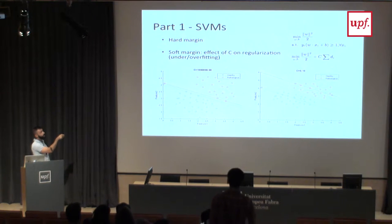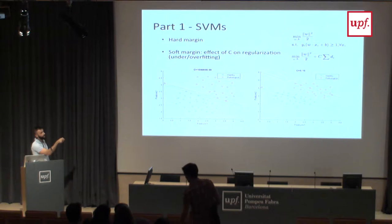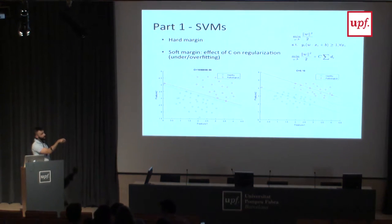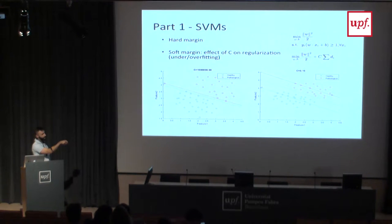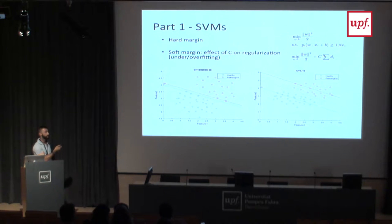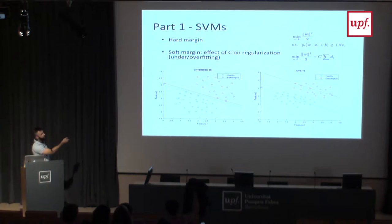First we use what's called a hard margin, which basically minimizes the distance of the line itself. Then if you introduce a parameter called C, it penalizes how far the elements that don't fit well are from your line. Moving this parameter C, you define how bad it is for your minimizing function to have some values close to your separating line, the yellow line. So you can underfit or overfit your system.